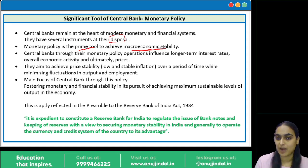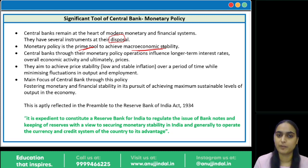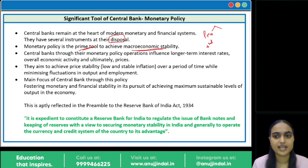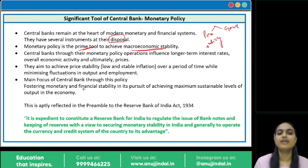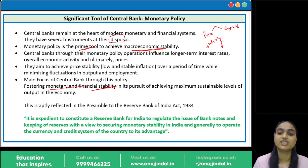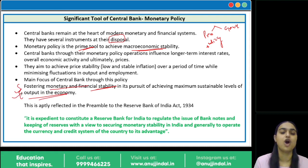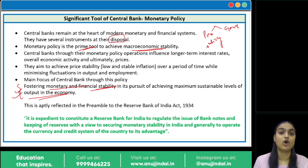RBI tries to ensure price stability and also ensure there are not much fluctuations in output and employment. These are the twin objectives of monetary policy: maintaining price stability while also ensuring growth. The main focus of the central bank through this policy is fostering monetary and financial stability and ensuring maximum levels of output. These objectives are also highlighted in the preamble of the RBI Act.